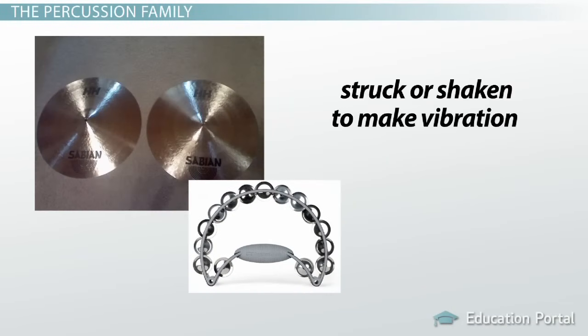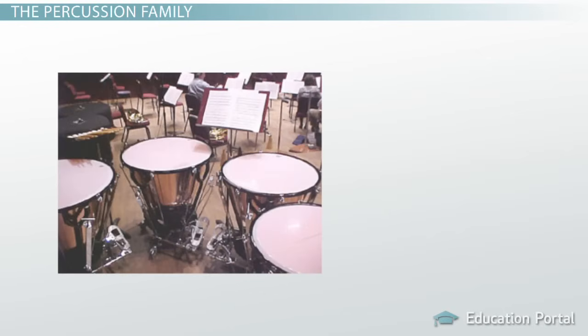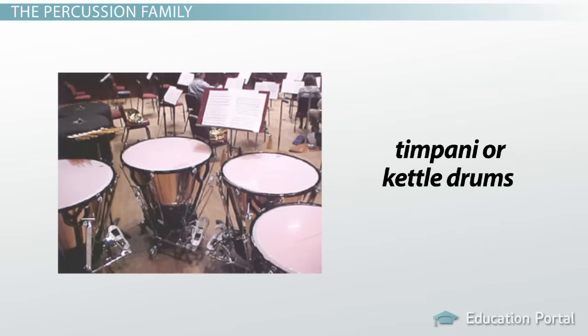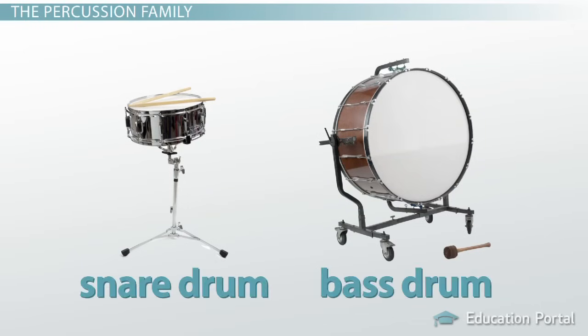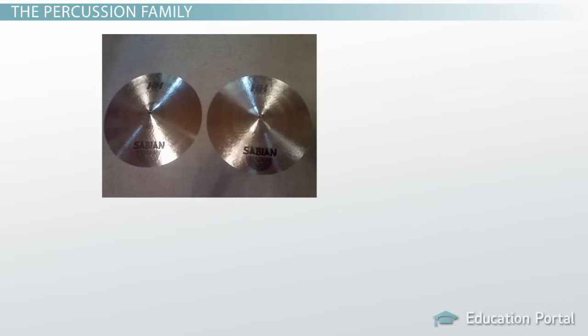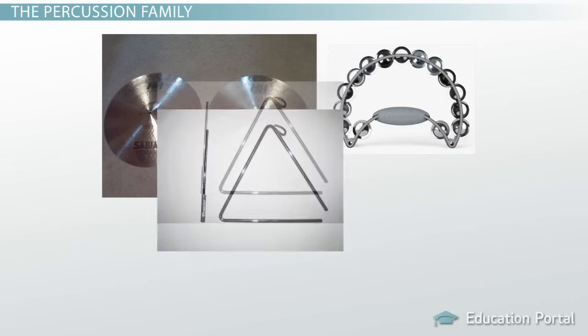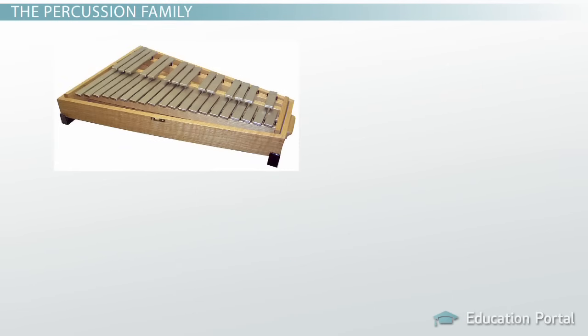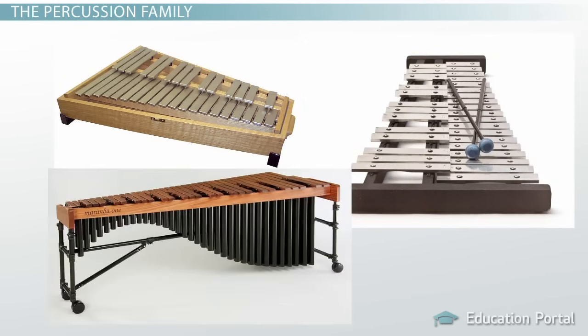All the way in the back of the orchestra is the percussion family, known for its loud banging and crashing. The percussion family has instruments that are struck or shaken to make their vibrations. Early orchestras didn't have much percussion and usually just had low-pitched drums called timpani, or kettle drums, to accompany the melody. Drums like the snare drum and bass drum were added later. Aside from drums, the percussion family includes cymbals, auxiliary percussion like the tambourine, triangle, shakers, and maracas, and mallet instruments like bells, xylophone, and marimba.